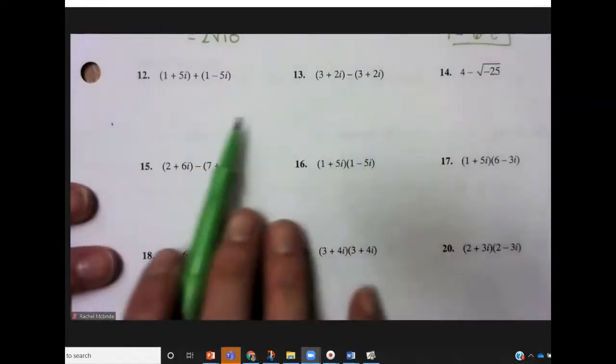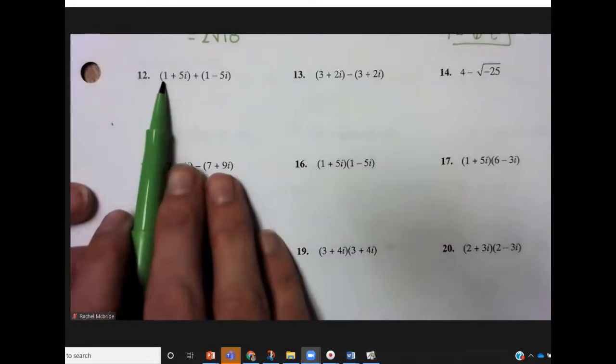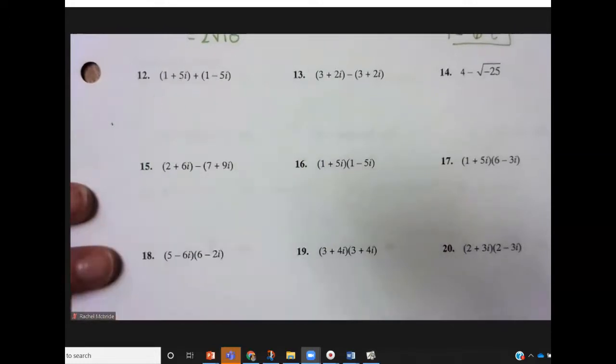And then down in examples like 12, 13, you're just combining like terms. So you'll add the ones to the ones and the i's to the i's.